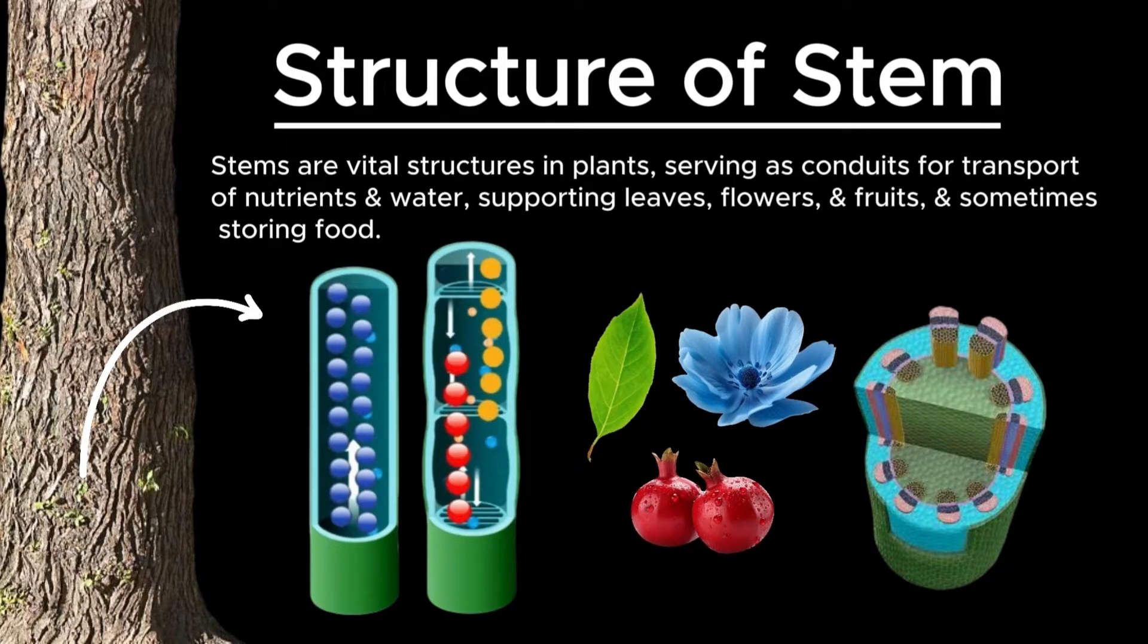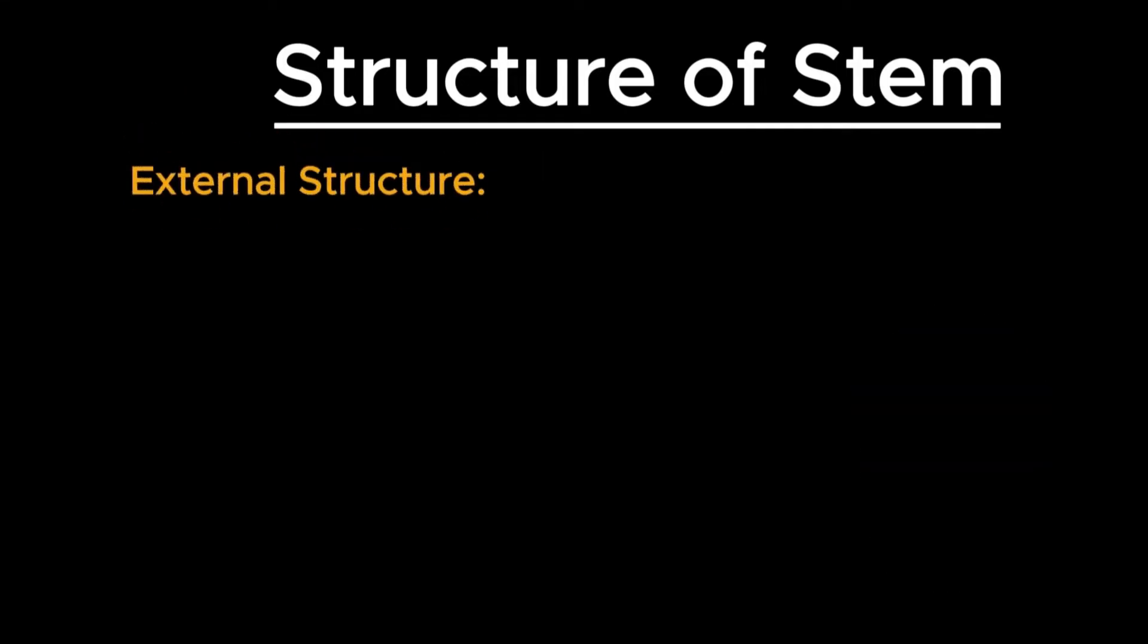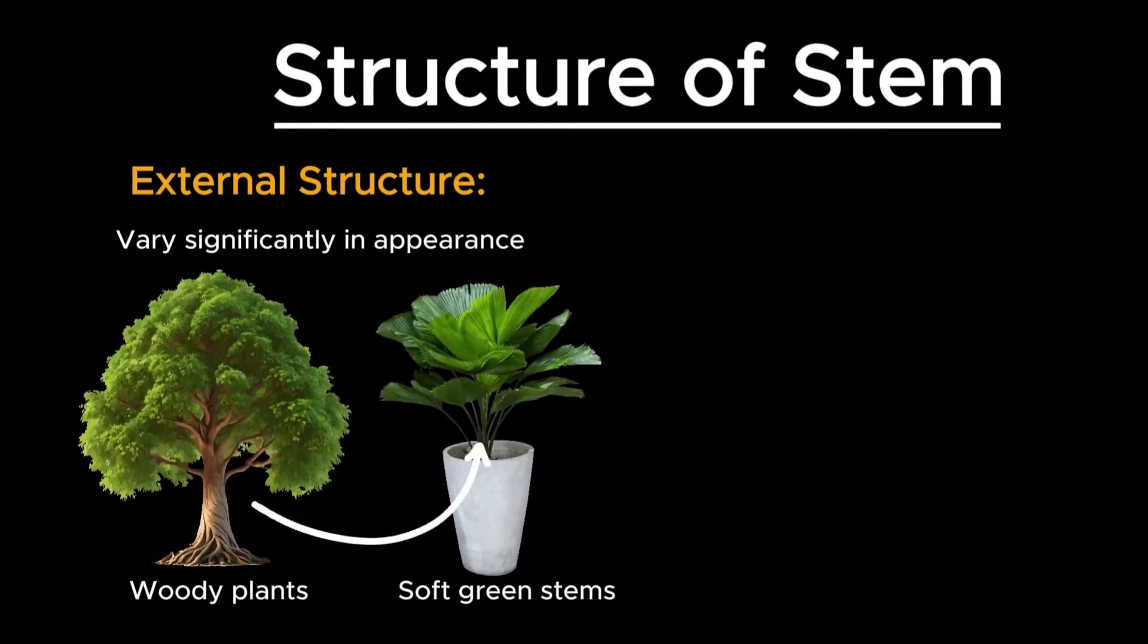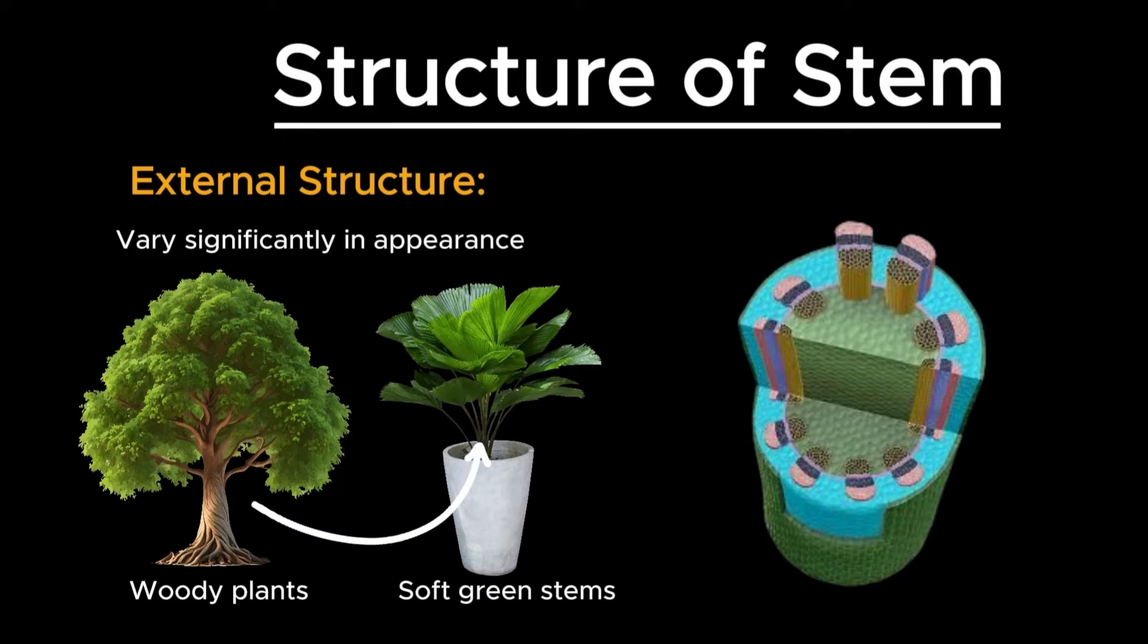Let's delve into the detailed structure of stems. From the outside, stems can vary significantly in appearance, ranging from the woody trunks of trees to the soft, green stems of herbaceous plants. Regardless of their external differences, the internal structure of stems shares common features designed to support the plant and facilitate transport.